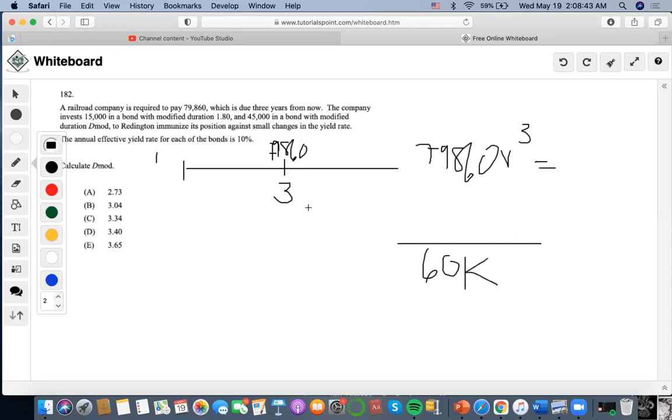Now, we also have to make sure that the duration of the assets and liabilities are equal to each other. So we're going to solve for the duration of this liability. We're going to take the cash flow times the time that it's occurring on, and discount it by the number of years back. So we're going to do $79,860 times 3 times 1.10 to the negative 3, and divide it by $60,000, and we're going to get 3.